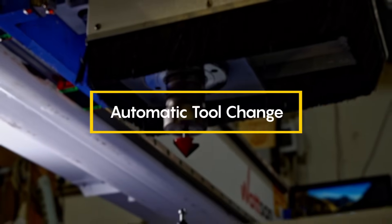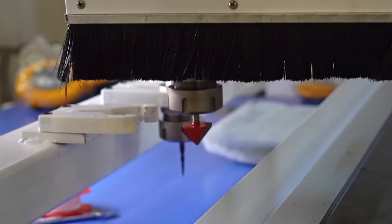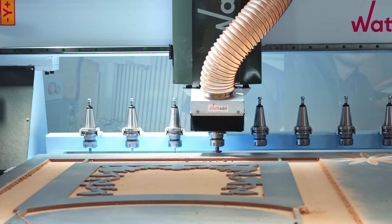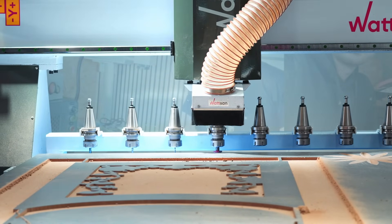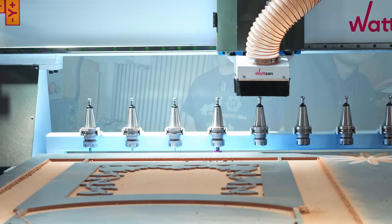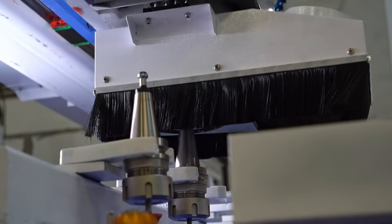Automatic tool change. All tool change operations occur automatically without operator intervention. All that needs to be done for automatic tool change is to select the tool according to the processing program, place it in the tool magazine, set the parameters and start the program.